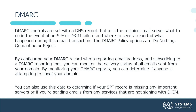The third component to this solution is DMARC itself. DMARC controls are set with a DNS record that tells the recipient mail server what to do in the event of an SPF or DKIM failure, and where to send a report of what happened during this email transaction. DMARC policy options are do nothing, quarantine, or reject.